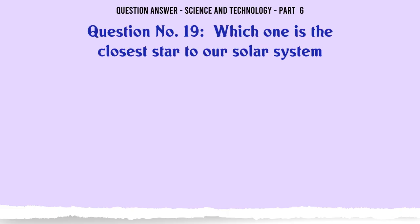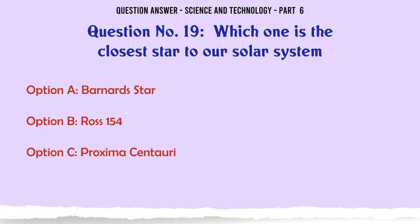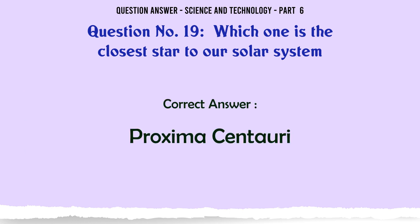Which one is the closest star to our solar system? A. Bernard's Star. B. Ross 154. C. Proxima Centauri. D. Sirius A and B. The correct answer is Proxima Centauri.